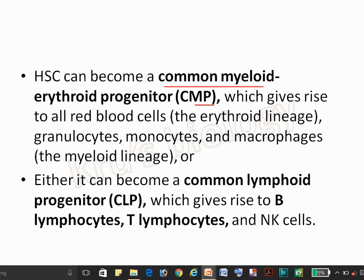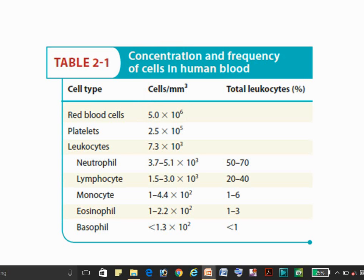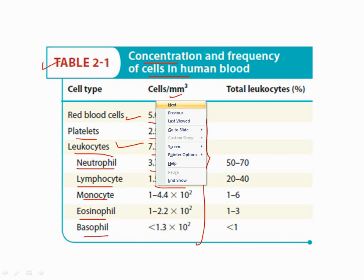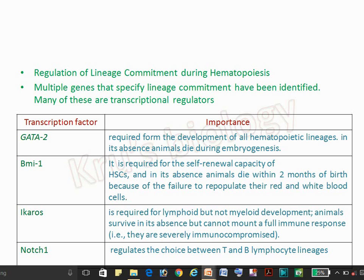The hematopoietic stem cell gives rise to red blood cells via the common myeloid progenitor and common lymphoid progenitor, and gives rise to different cell types. Here in the table you can see the concentration and frequency of cells: red blood cells are 5×10⁶ cells per mm³. You don't have to remember all values, but they are important for competitive exams — especially the RBC and leukocyte values.